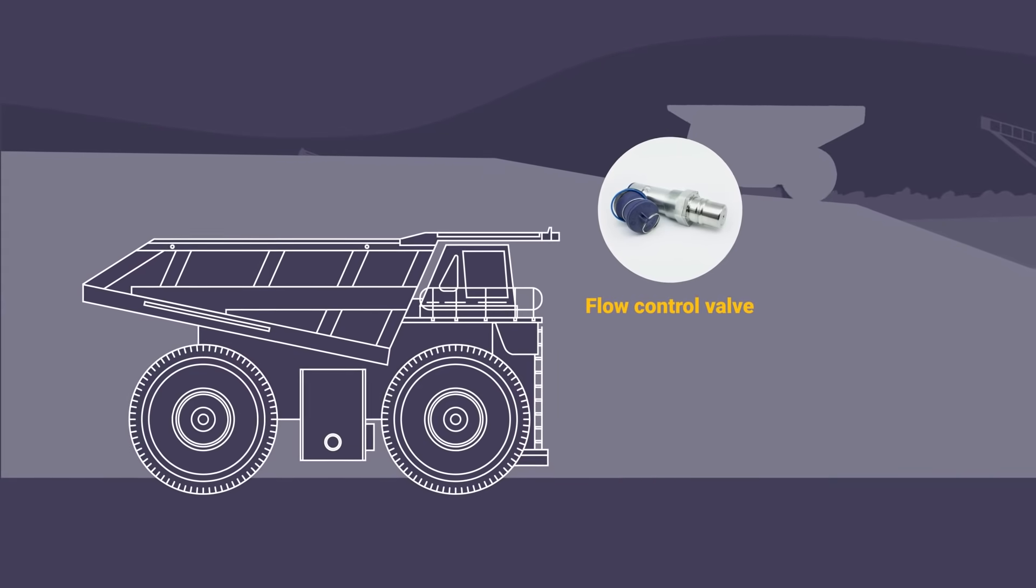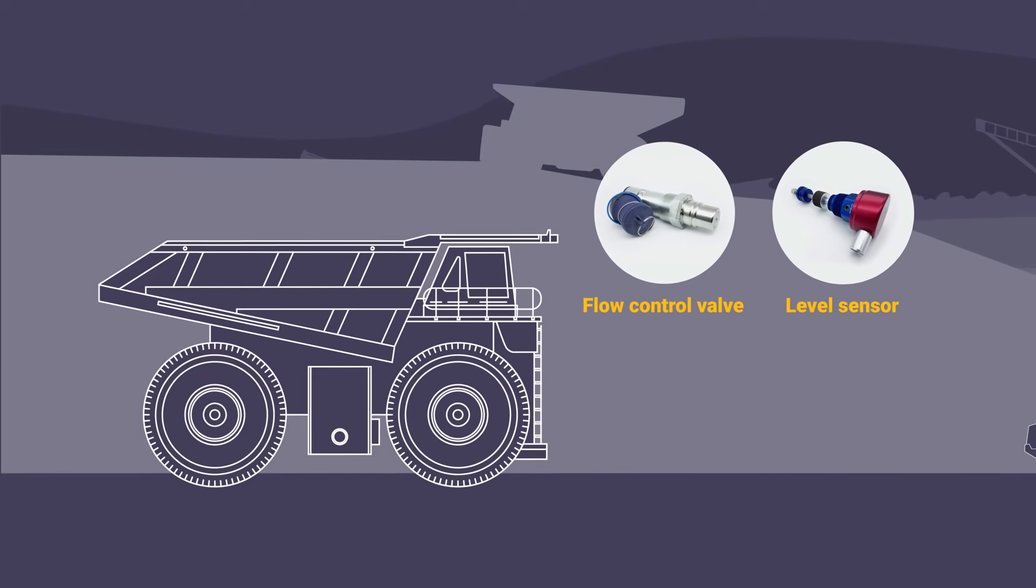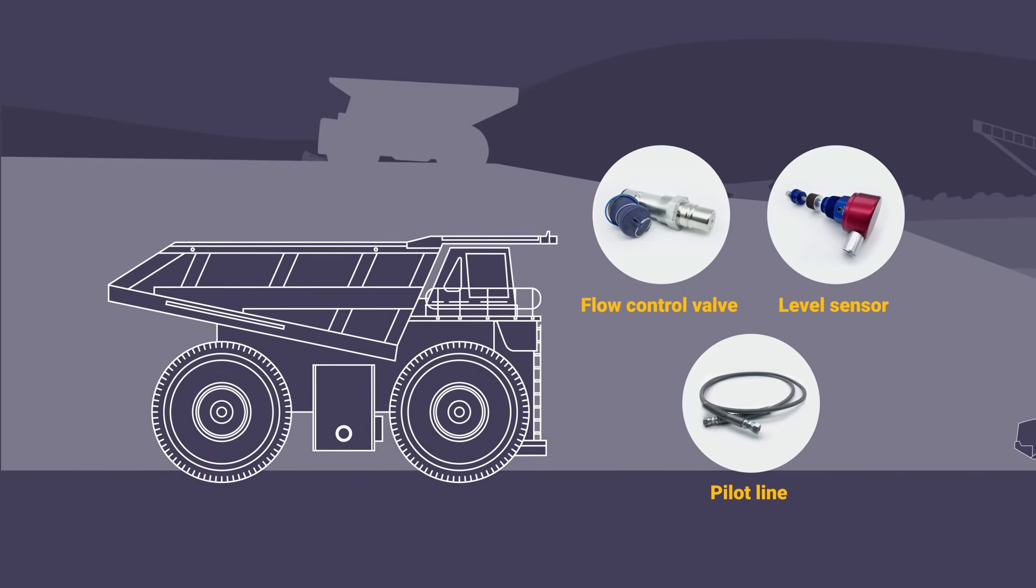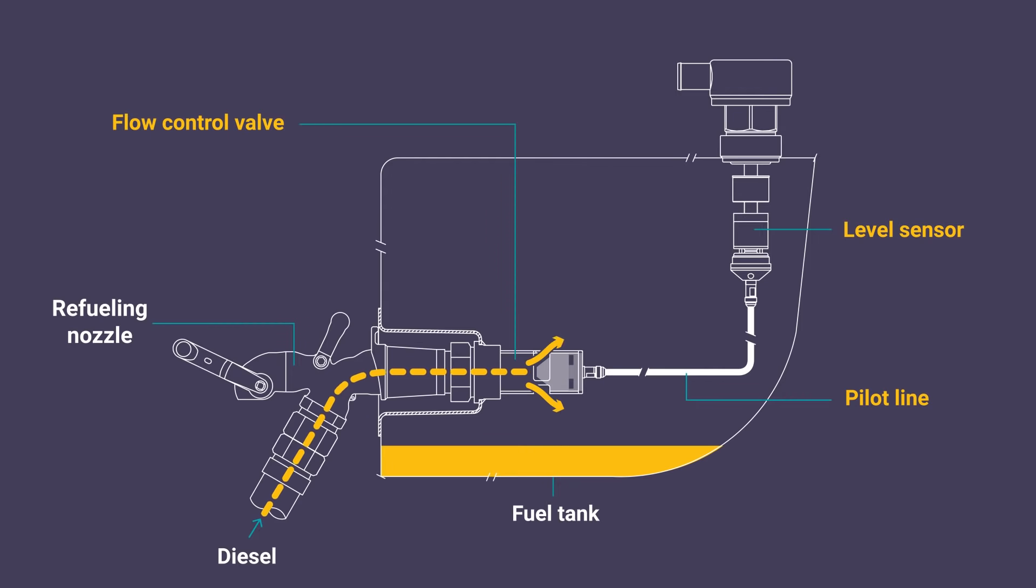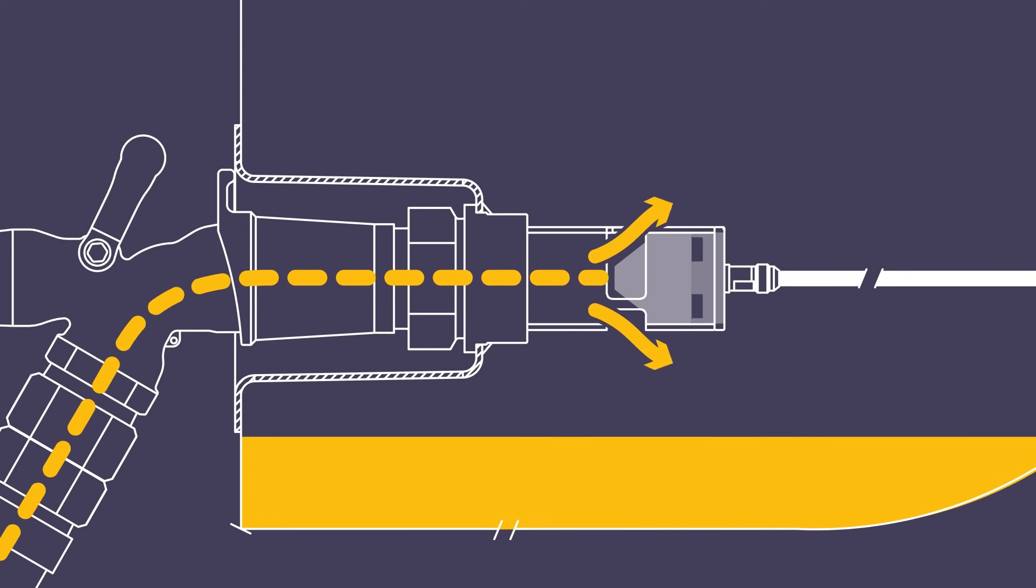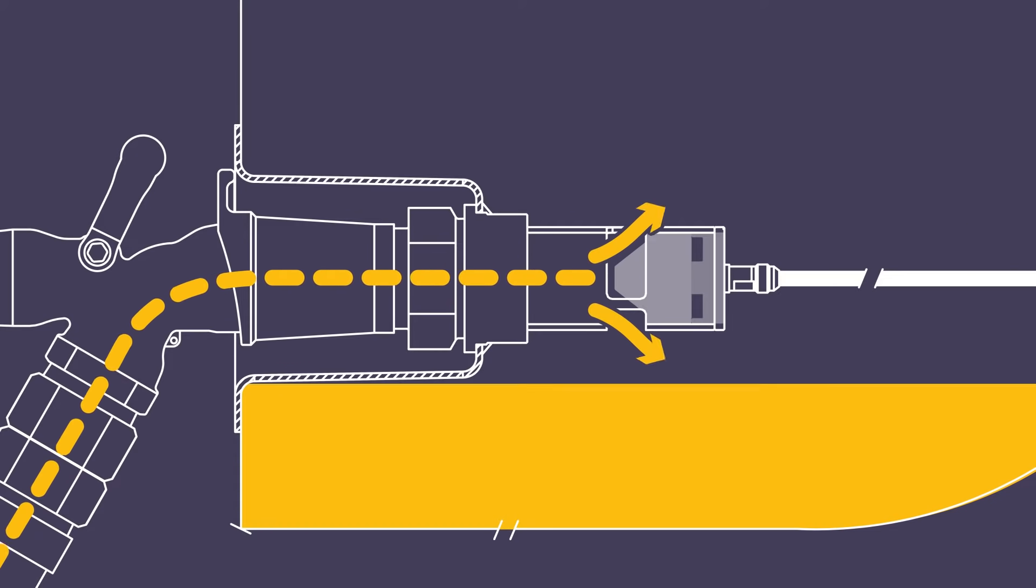Banlaw Fill Safe Zero Kits comprise of a flow control valve, a level sensor, and a pilot line to connect them. Diesel from the pump passes through the selected filling hardware and then efficiently passes through the flow control valve into the tank.